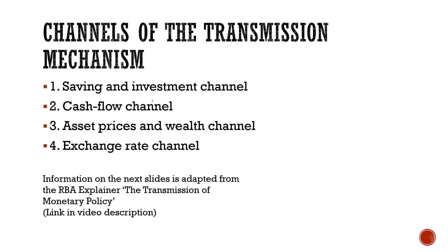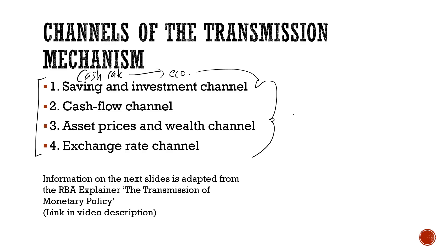If we think about how the transmission mechanism works, there are four main channels through which the cash rate affects the economy. We're going to look at these in turn. The information in the next slides is adapted from an RBA explainer sheet called the Transmission of Monetary Policy — very, very useful. I'll put a link to that also in the video description.